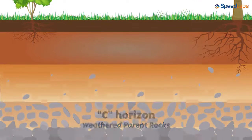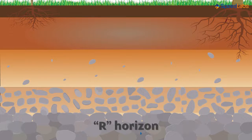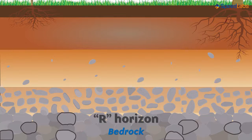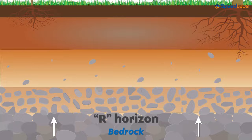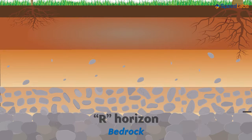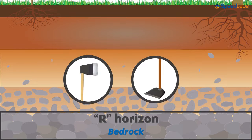The unweathered rocks are located below this layer, in the last horizon called the R horizon, which means the bedrock. The R horizon consists of only huge unweathered rocks. These, when cracked due to any reason, give rise to the formation of the layer above. This layer is very hard and is extremely difficult to dig through with generally used digging instruments like the axe or a hoe.